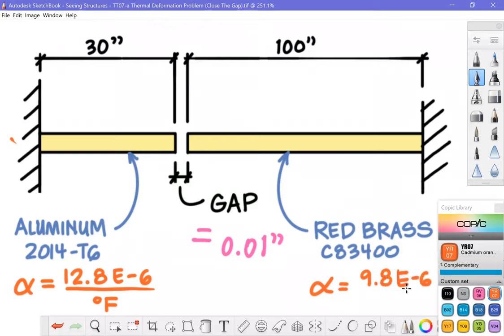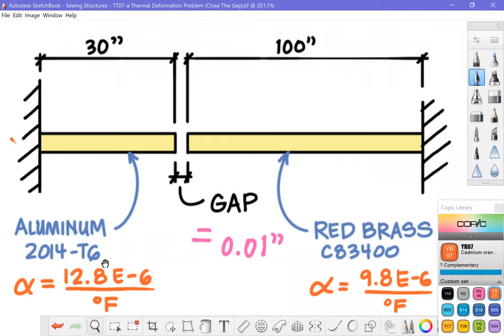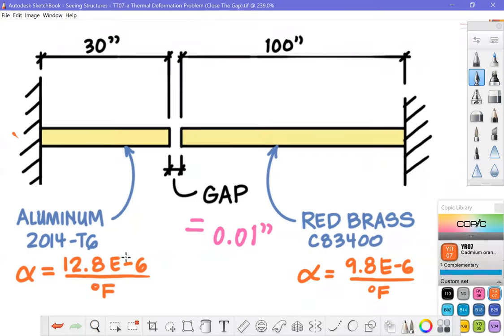and for red brass C83400 I've looked that one up as well and it is equal to 9.8 E-6 strain per degrees Fahrenheit. Right off the bat here we can compare these two values and we can note that alpha for aluminum is a little bigger, 12.8 compared to 9.8 for brass, so we're going to get more movement per degree Fahrenheit per unit length of the aluminum compared to the brass